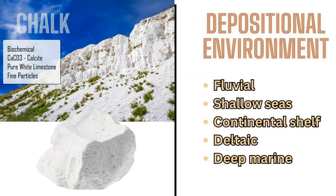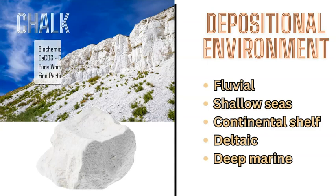Chalk is a white limestone variety. If you find it, it means it formed from an environment that includes fluvial river-based environments, shallow seas, continental shelves, flood plains, river deltas, and deep marine environments.